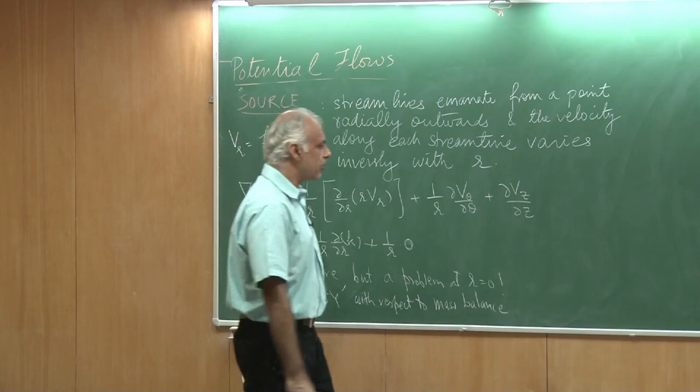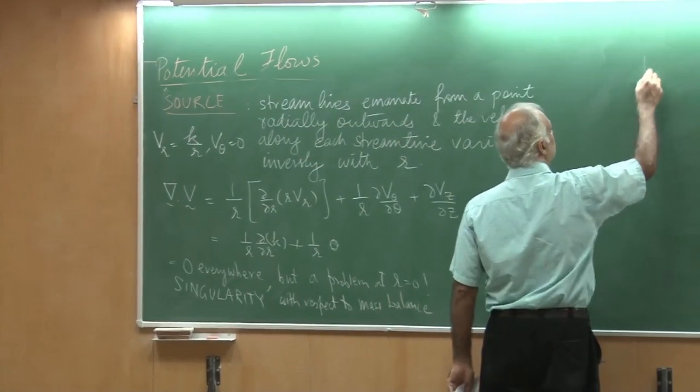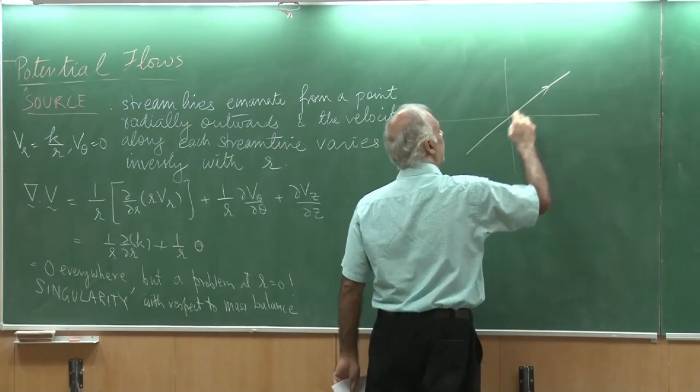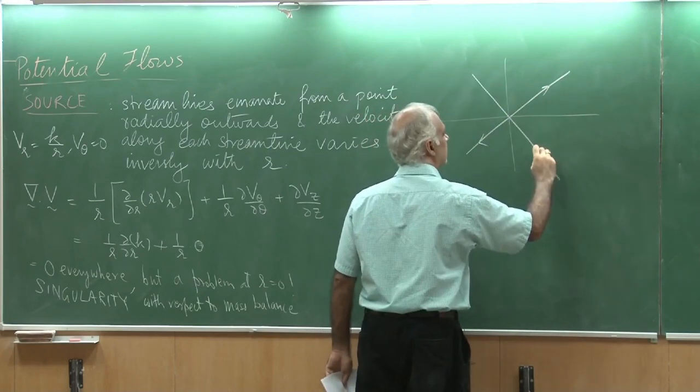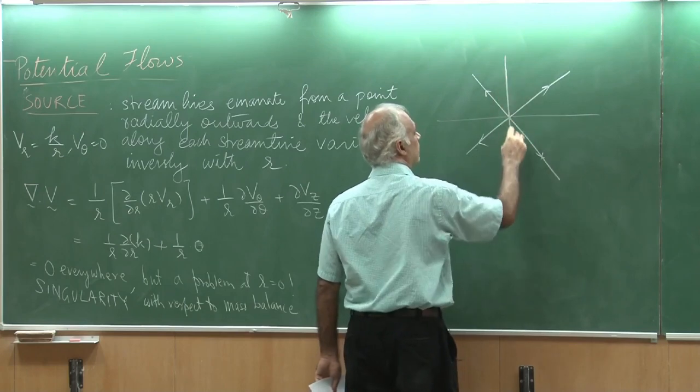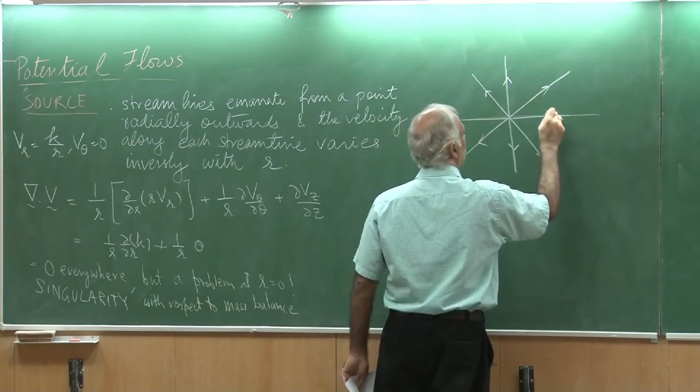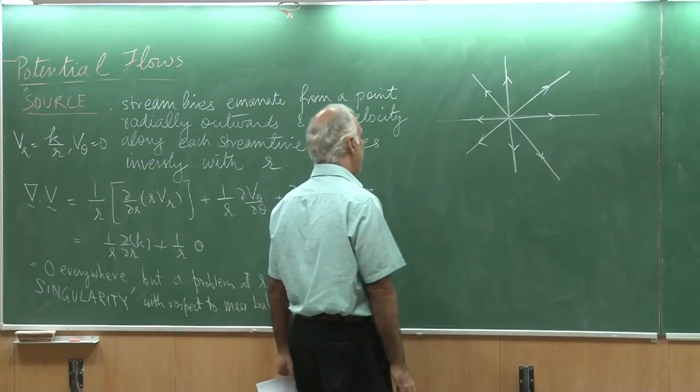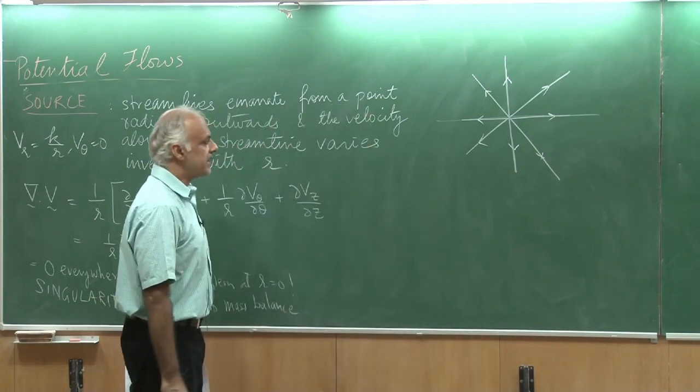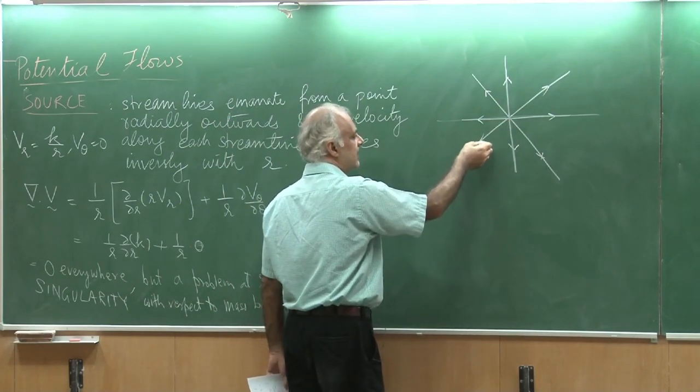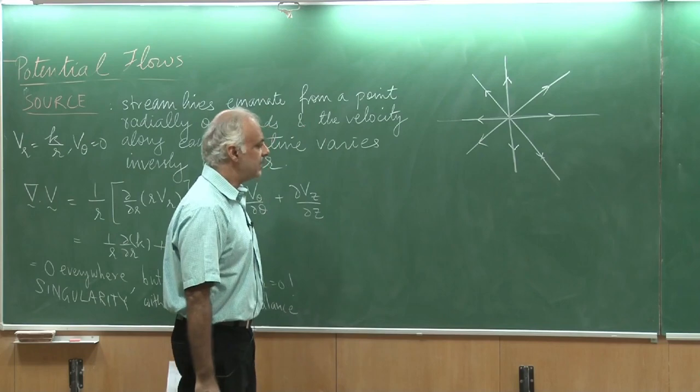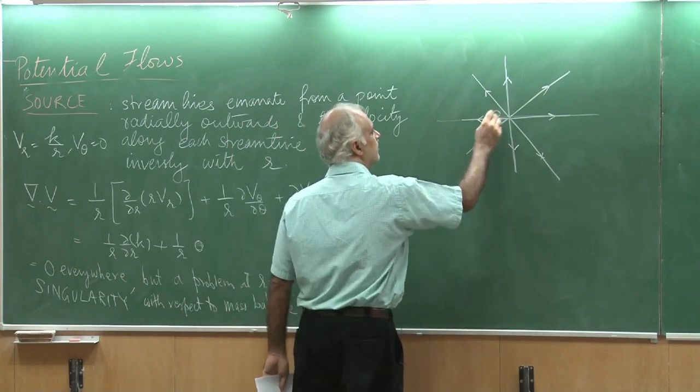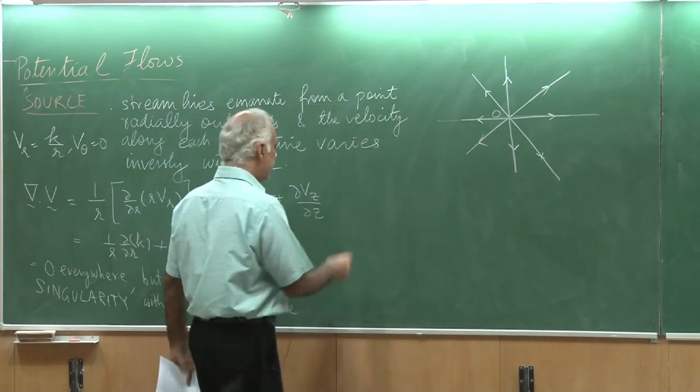In fact, if we wanted to draw this flow, the flow looks something like this. This is my origin, and the streamlines are actually going radially outward. These are my streamlines. At each point, if I draw a velocity vector, then I see that only the radial speed is non-zero. There is no component along the theta direction.